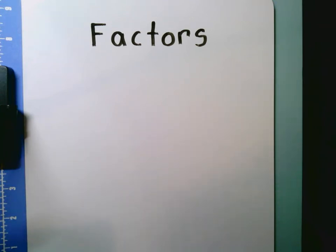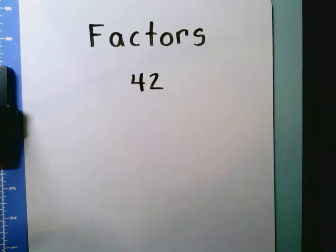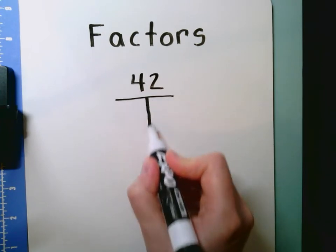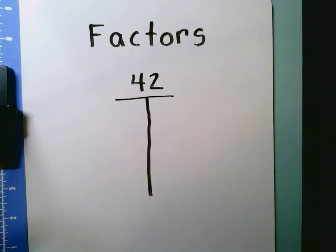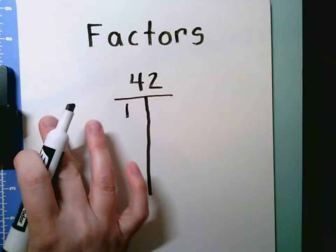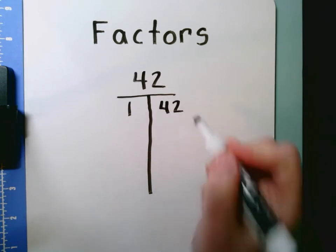Let's try another example of finding factors of a number. What if we were given a number that we're not as familiar with? Let's find all the factors of the number 42. I'm going to make a factor T-chart. I'm always going to start with the number 1 and then work my way through the number line. I know that 1 times any number is itself, so 1 times 42 equals 42.